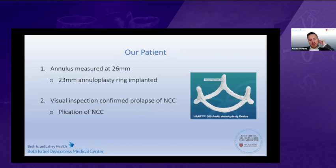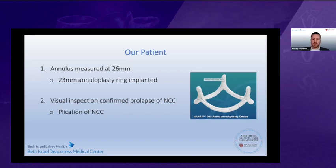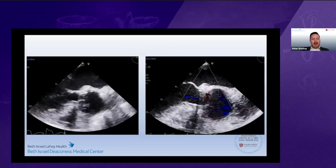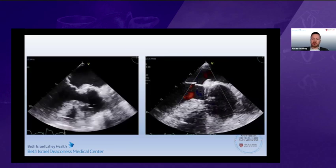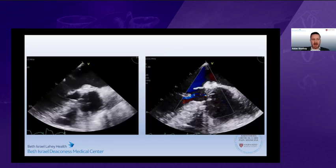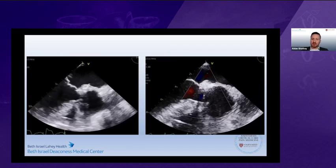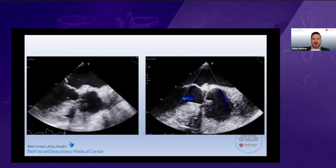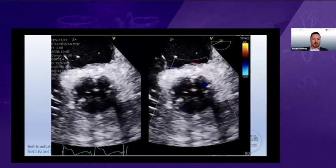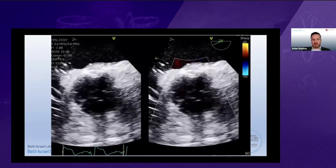This patient underwent an annuloplasty. The surgeon visually inspected the valve, confirmed prolapse of the non-coronary cusp, and performed a plication of the non-coronary cusp. Post-bypass, the patient had trace aortic insufficiency with good coaptation between all the leaflets.